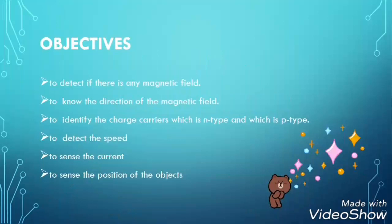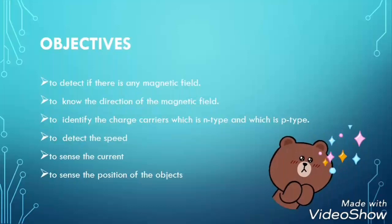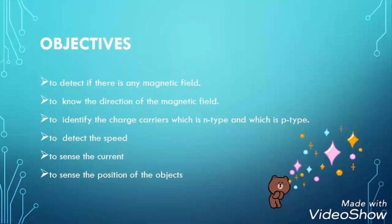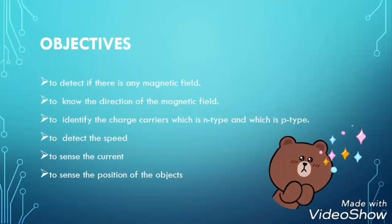Hall effect principle and Hall effect sensor can be used to detect the magnetic field, and it can also be used to identify the charge carrier, which is positive and which is negative. It is also used in applications to detect the speed, to sense the current, and to set the position of the object.